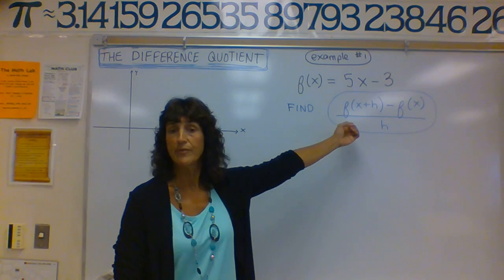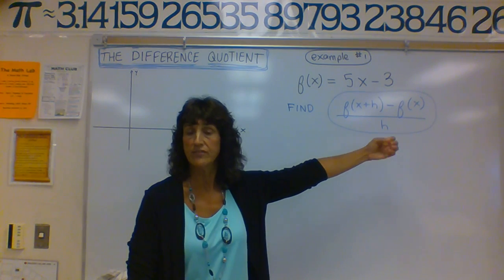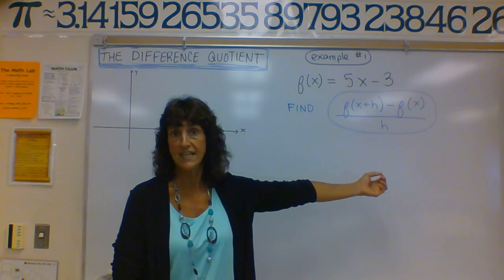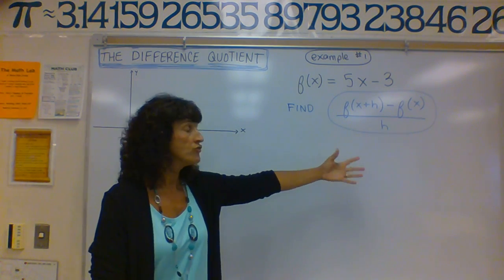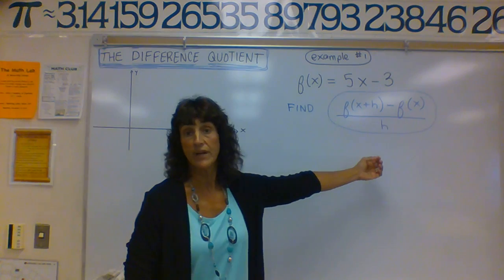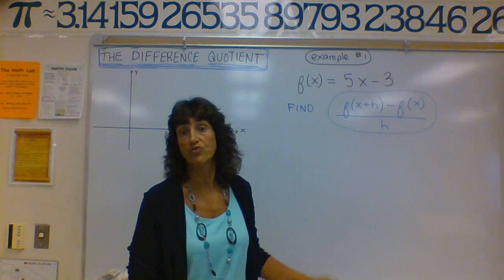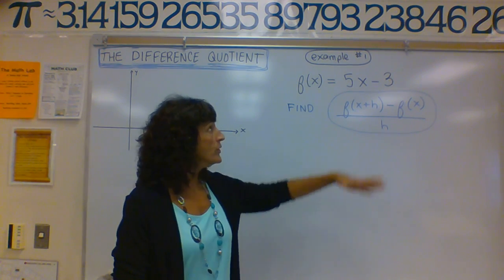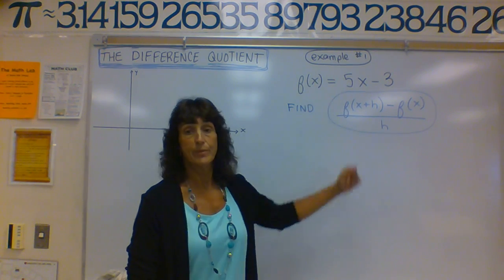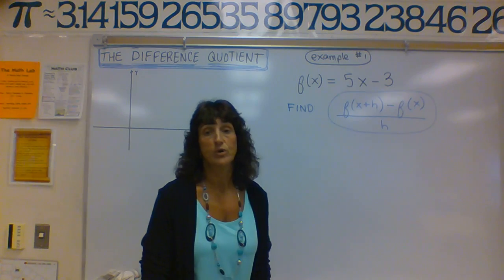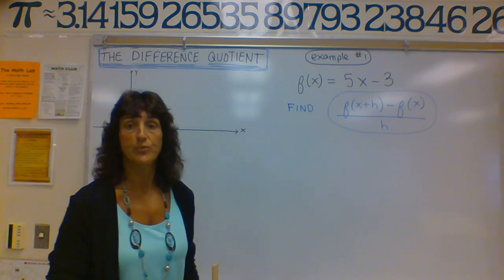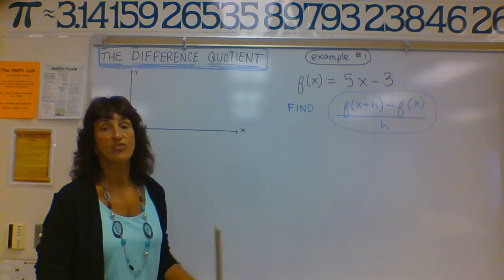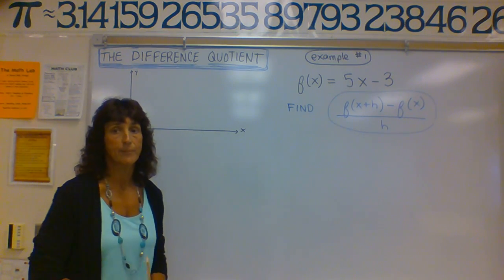For example, velocity is a rate of change because it's change in position over change in time. Slope of a line is a rate of change because it's rise over run. So before we do our example involving the difference quotient, I'd like to show you where this notation comes from.